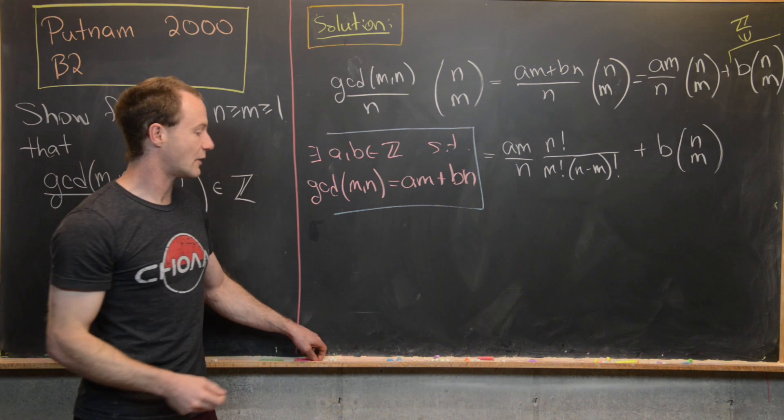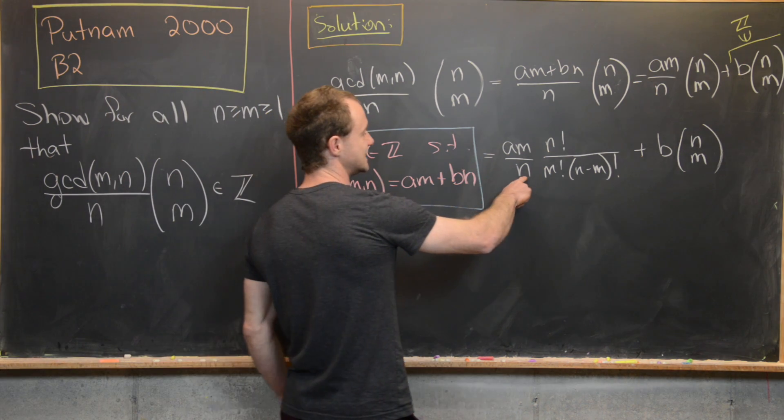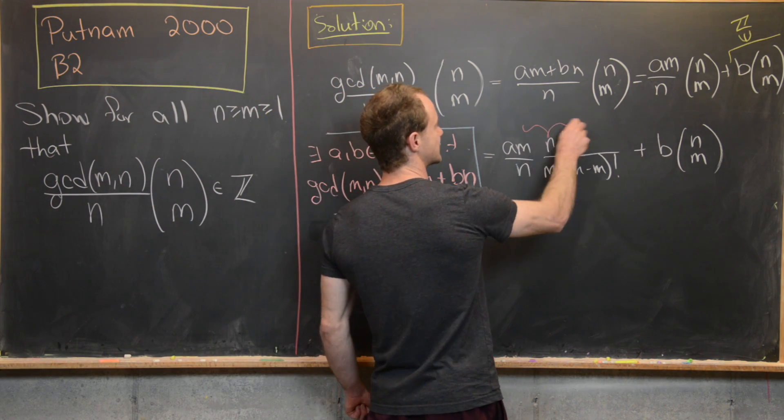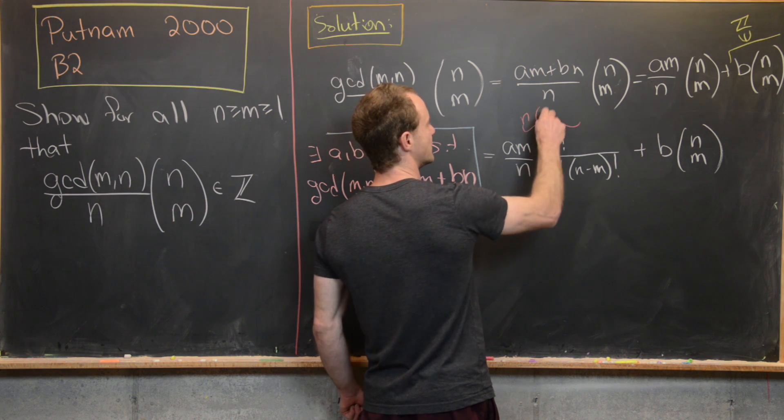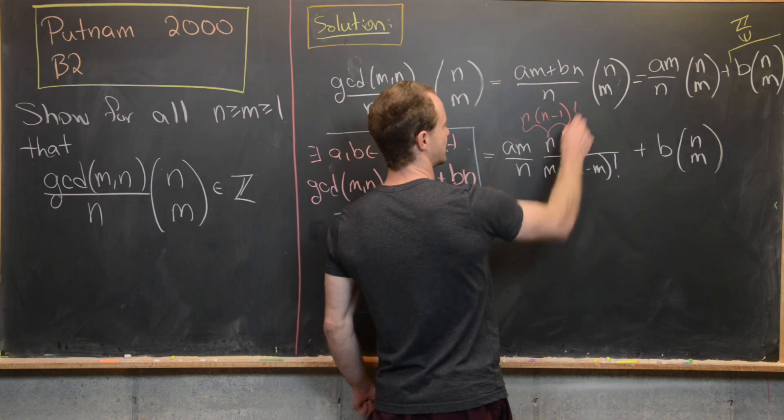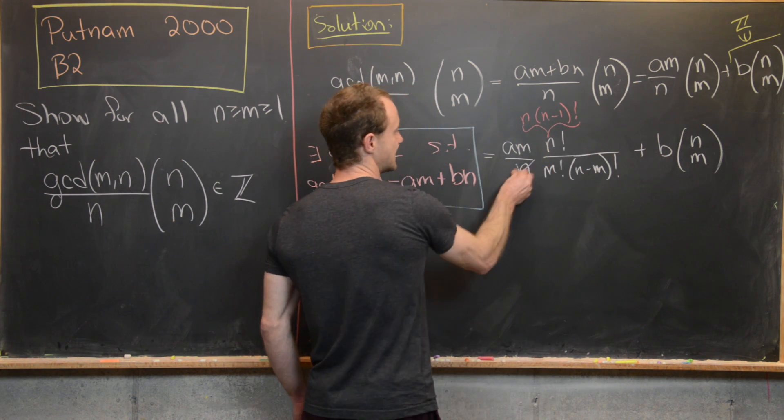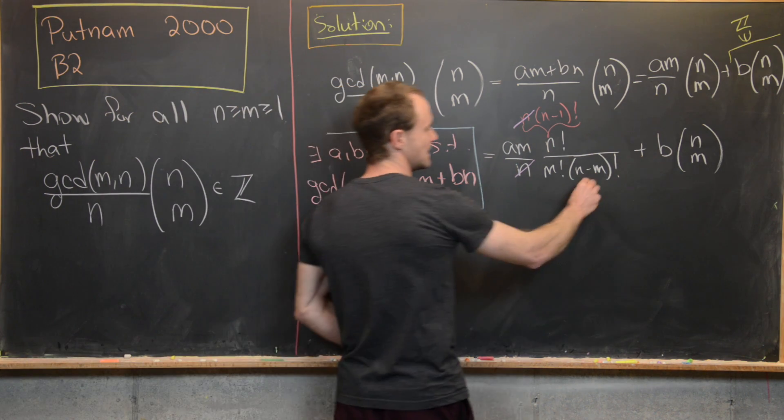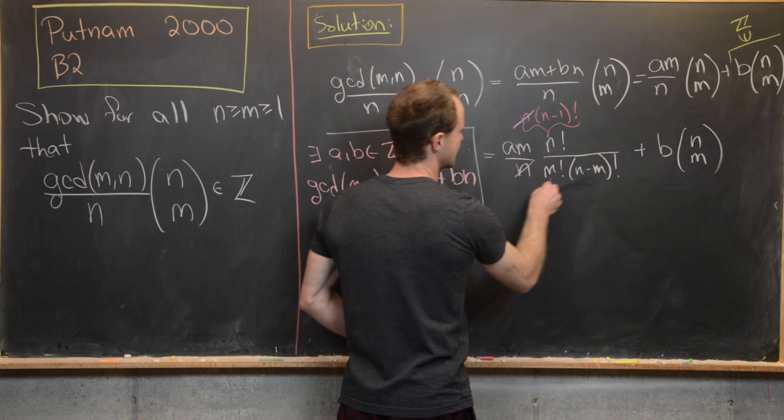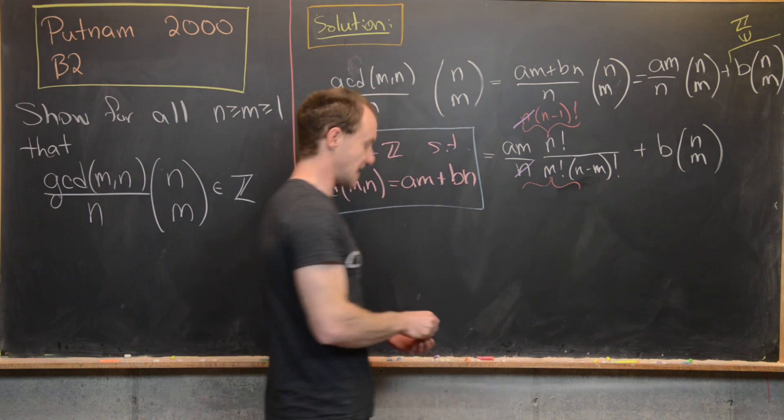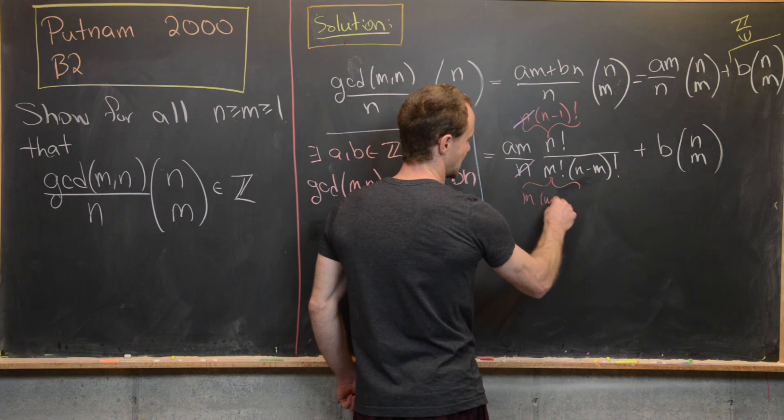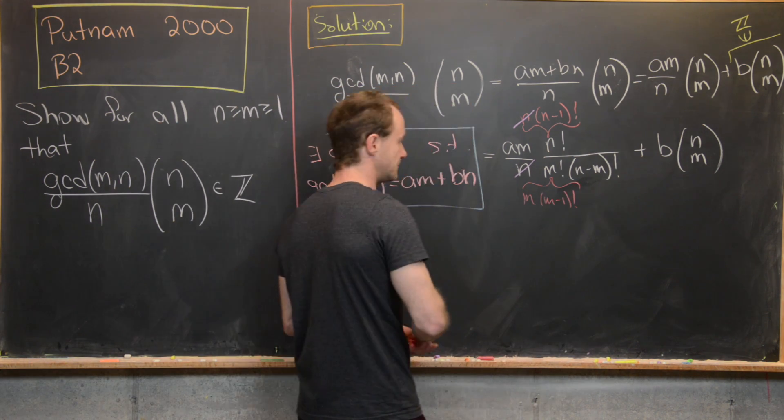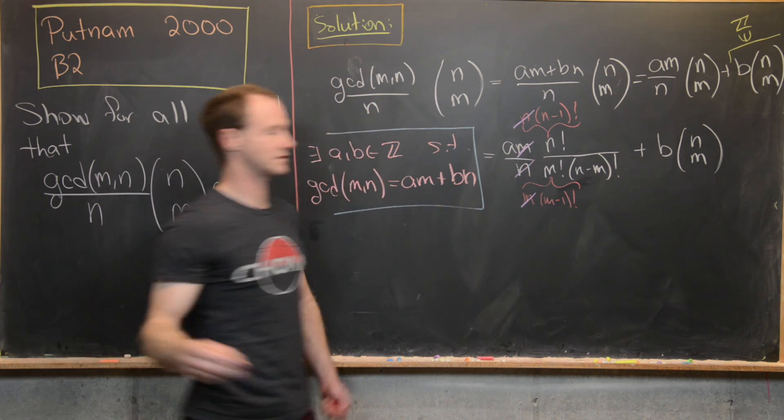Now we've got some simplification that can occur. So notice this n can cancel this n factorial if we view it as n × (n-1)!. So we've got this simplification. And then likewise, this m can simplify this m factorial if we view it as m × (m-1)!. So we've got that cancellation as well.